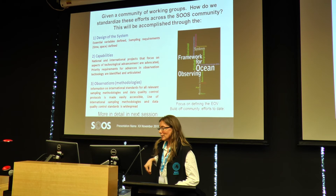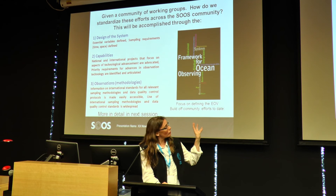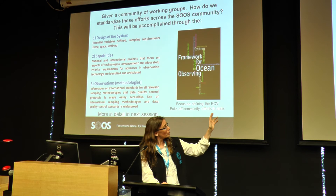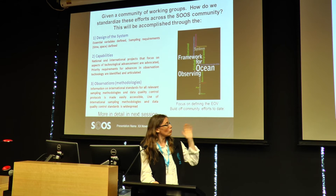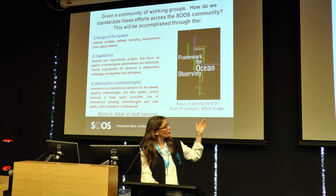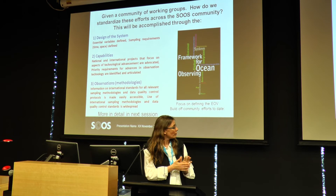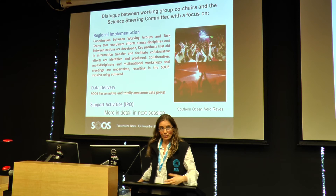In the next session we will go through all this detail. Given a community of working groups, how do we standardize these efforts? There are six ways to accomplish this. The first is design of the system: define essential variables, sampling requirements, etc. The second is capabilities — national and international projects focused on different aspects of technological advances, with priority requirements for advances in observation technology identified and articulated. The third is observations — methodologies, information on international standards, and where there are no standards, to develop them.